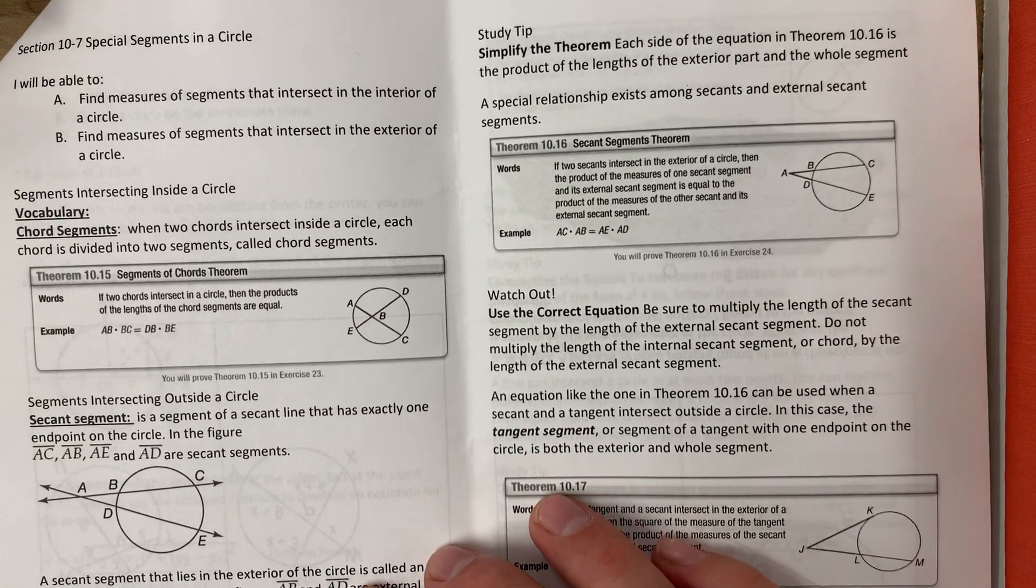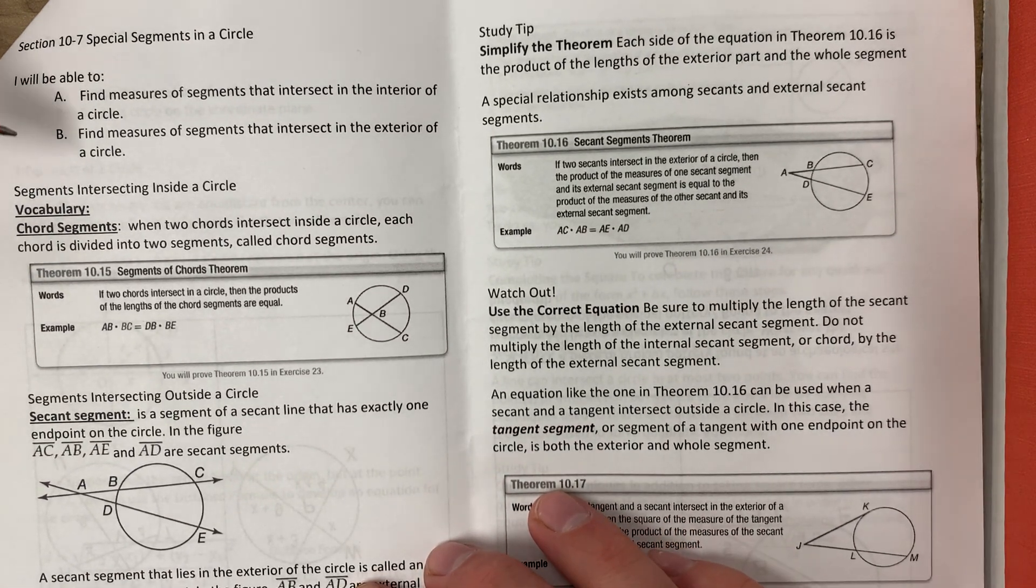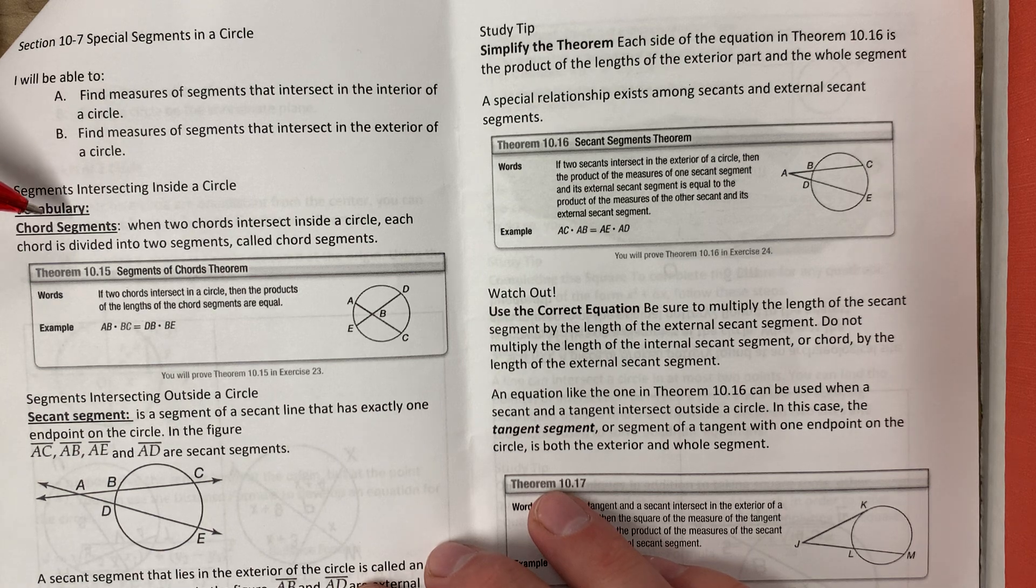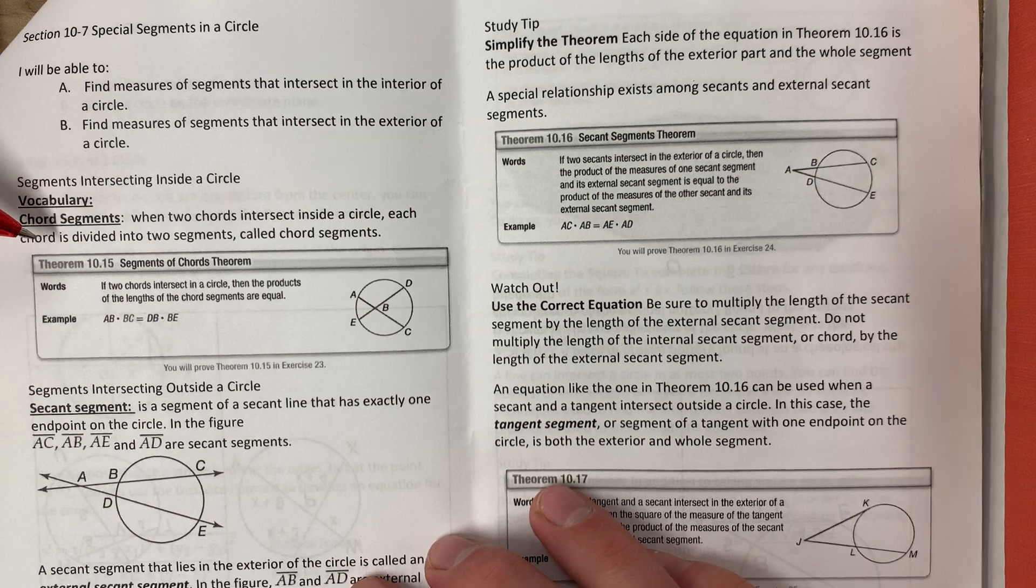Alright, today we're doing 10-7, which is special segments in a circle. Chord segments: when two chords intersect inside a circle, then each chord is divided into two segments called chord segments.